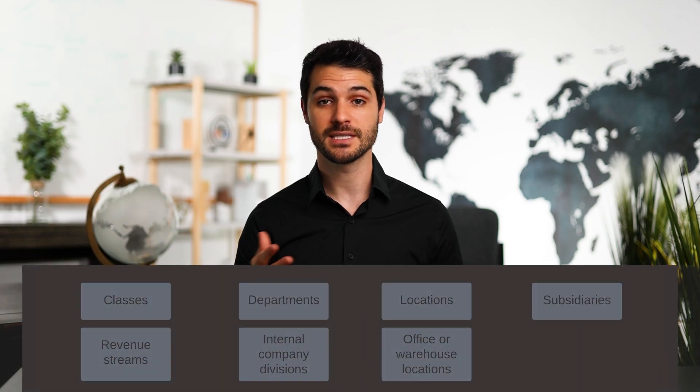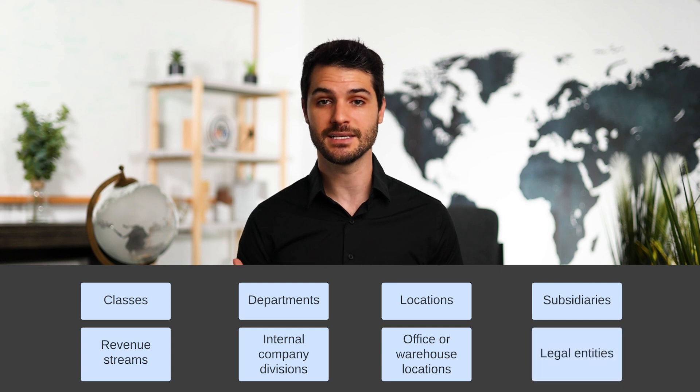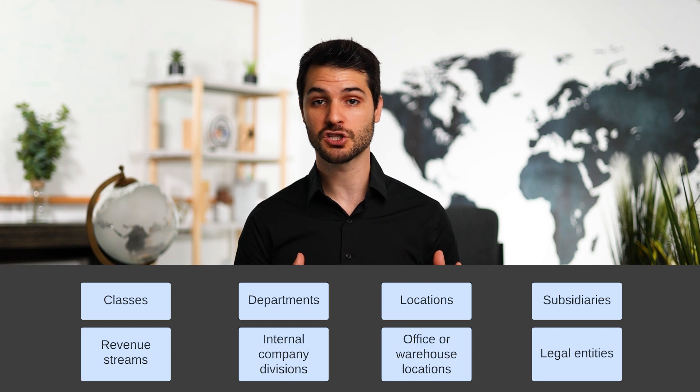Lastly, we have subsidiaries — simply the legal entities for any organization. You can think of it like a family tree: at the top you have the parent or holding company, and under it you have child subsidiaries that branch off. For example, a parent company based in Boston might have a North American subsidiary and a Europe subsidiary.